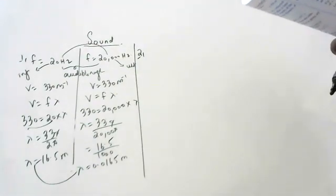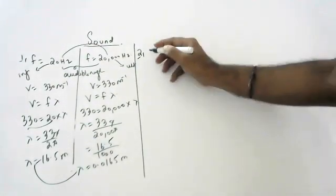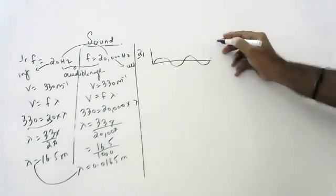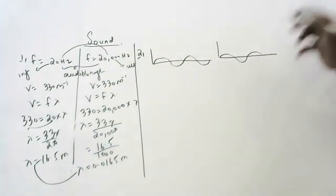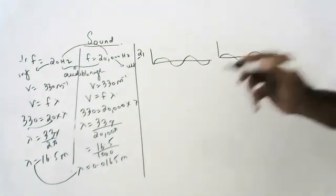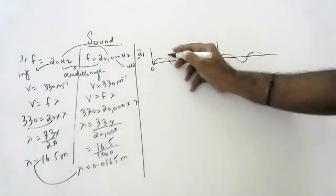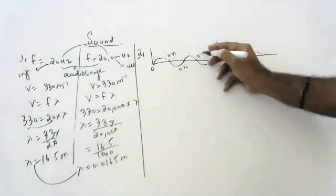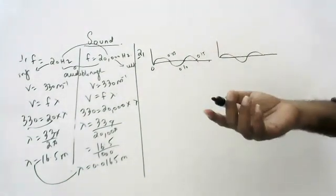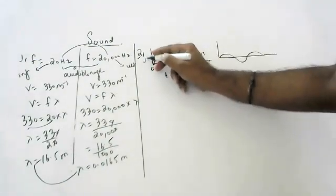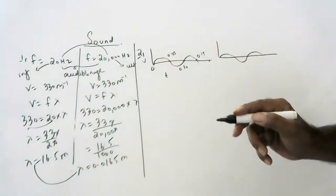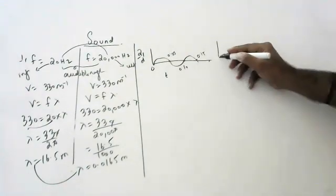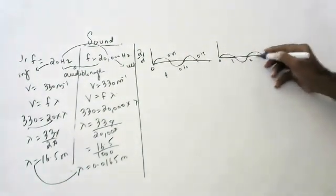The next question involves a diagram. The diagram shows two waves. The x-axis shows values 0.05, 0.10, and 0.15, representing time or distance, and the y-axis represents velocity or displacement. This is a distance-time graph. The second wave diagram has x-axis values of 0, 1, 2, and 3.